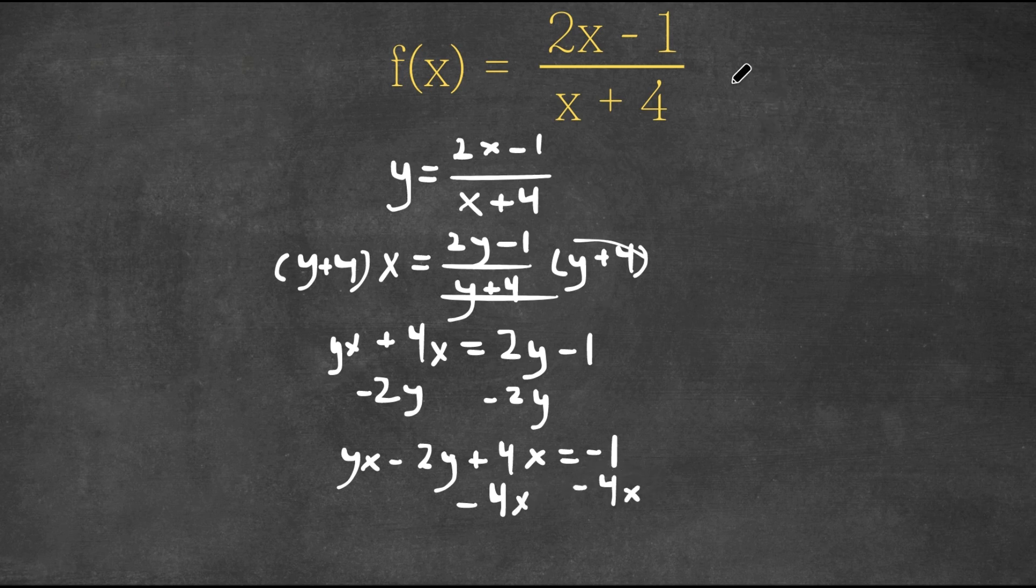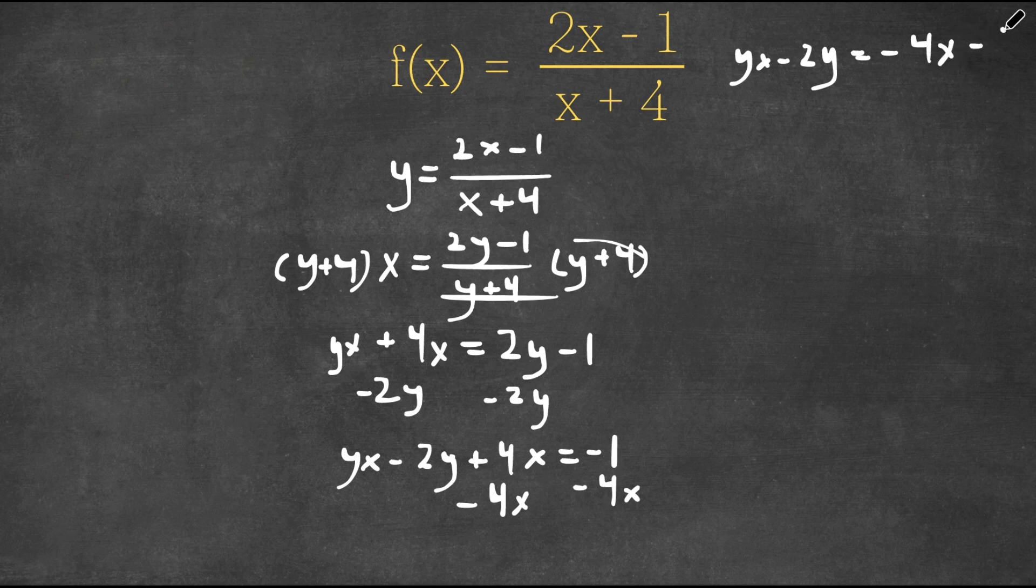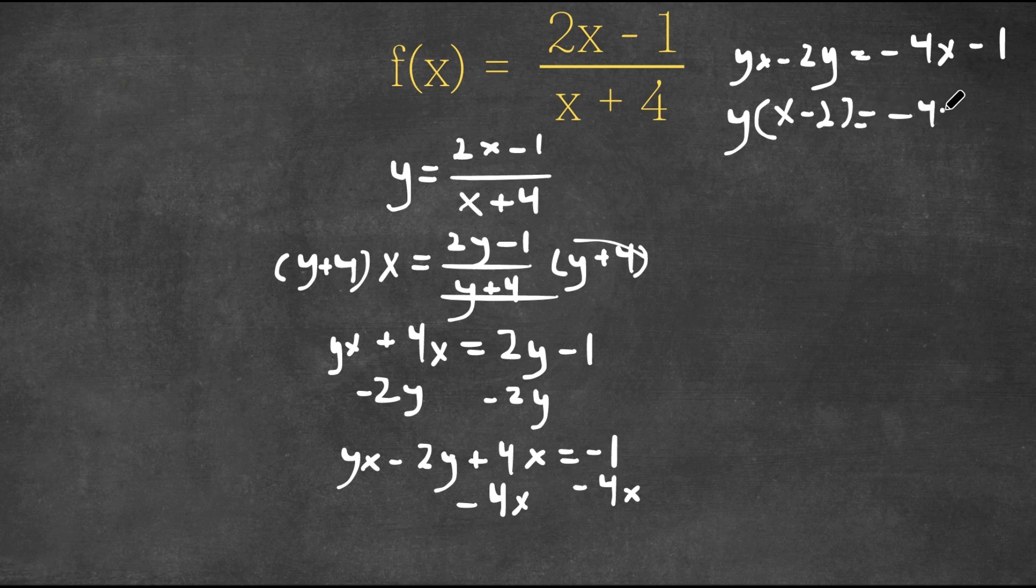So now we have yx - 2y = -4x - 1. And now if I factor out y from here, you have y(x - 2) = -4x - 1.